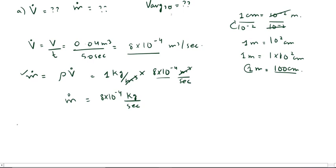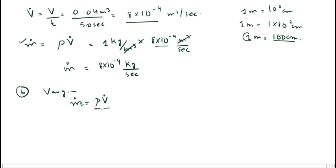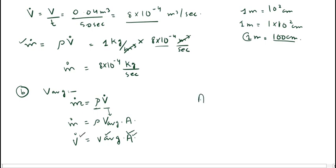For the second part, we find V-average. Recalling the formula, mass flow rate m-dot equals density rho times volume flow rate V-dot, and volume flow rate also equals V-average times area. So V-dot equals V-average times area. We know V-dot, so we need to find the area first.